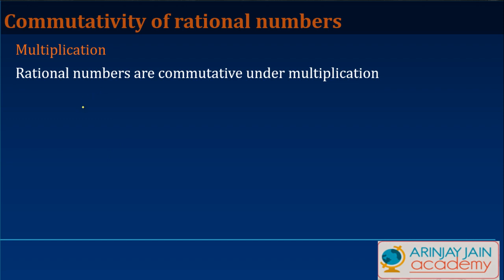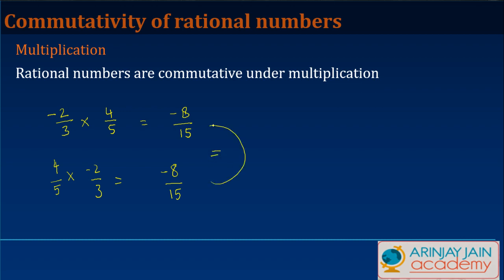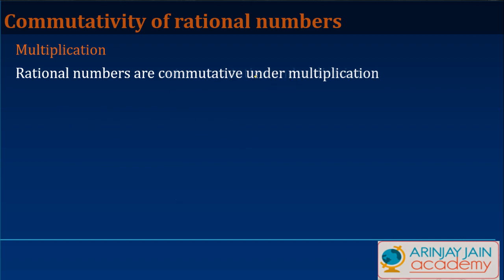Let's look at multiplication. Take two rational numbers: minus 2 by 3 and 4 by 5. Multiplying gives minus 8 by 15. Now reversing the order: 4 by 5 times minus 2 by 3 also gives minus 8 by 15, which is equal to the first result. So we say that rational numbers are commutative under multiplication.